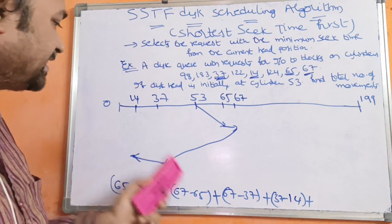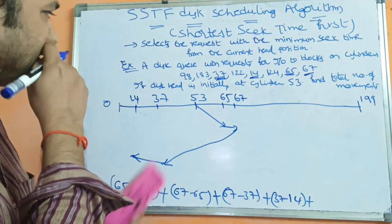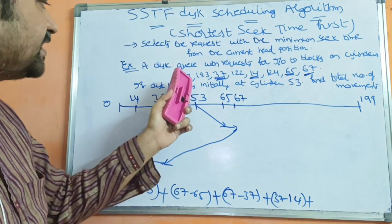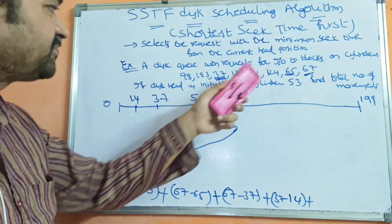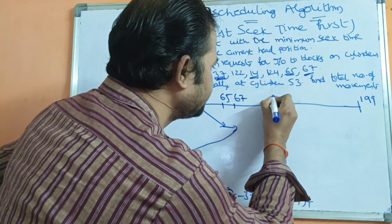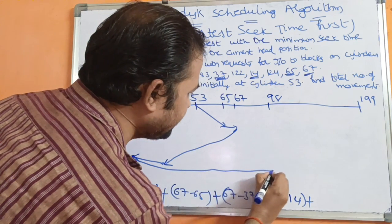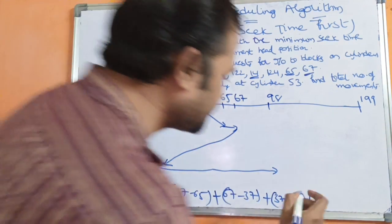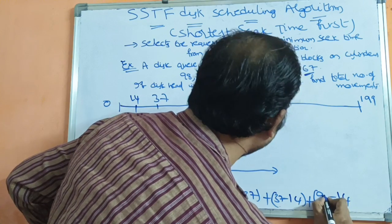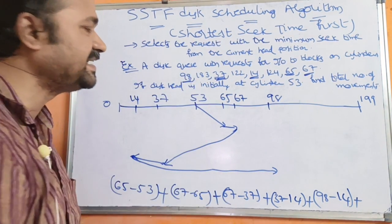From cylinder 14, the remaining requests are 98, 183, 122, and 124. The nearest value is 98, as the difference between 98 and 14 is the smallest among the remaining. So next we go to cylinder 98. The movement is 98 minus 14.